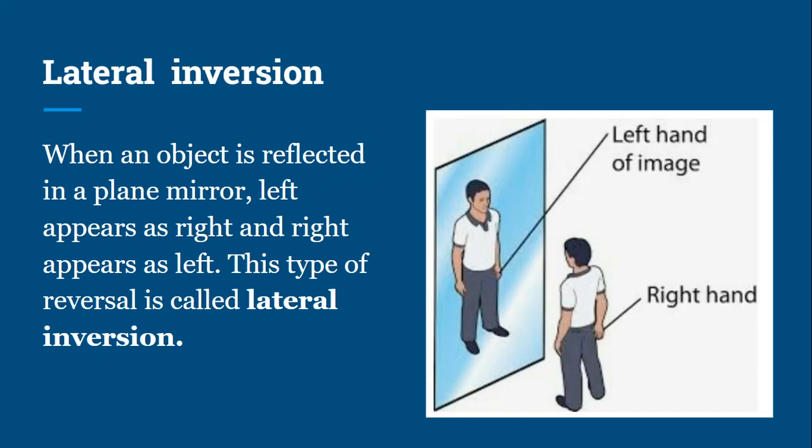The image formed in a plane mirror always displays lateral inversion. For example, if you are showing your right hand in the mirror, the mirror will reflect your left hand. This is called lateral inversion.